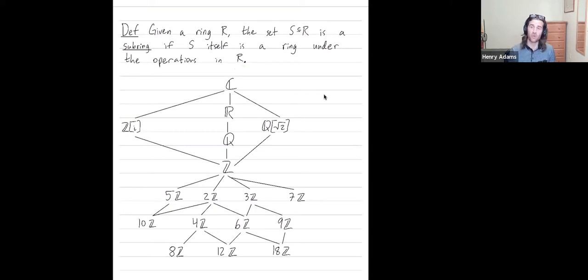So in particular, if you take two elements in S and you multiply them, the product better be in S. If you take two elements in S and add them, the sum better be in S. There might not be multiplicative inverses, but the additive inverse of an element in S had better be in S. The additive identity had better be in S, etc.